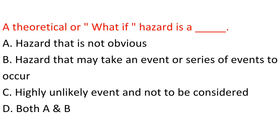Question: A theoretical or what-if hazard is a dash. A. Hazard that is not obvious. B. Hazard that may take an event or series of events to occur. C. Highly unlikely event and not to be considered. D. Both A and B. Answer: D. Both A and B.